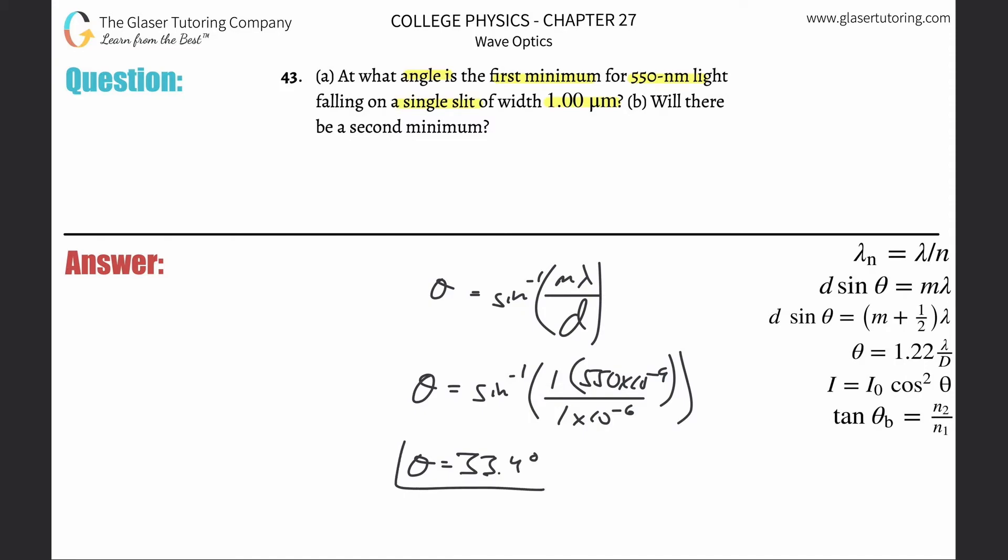And it's asking us, will there be a second minimum? So all you have to do here is just cancel the one, put a two there. Now redo the calculation. If you get an answer, meaning if the calculator doesn't spit out something that looks strange, then you do. If it gives you like error or domain error, then there is no second minimum. So ready?